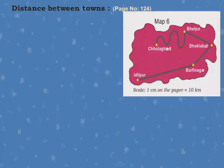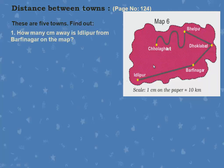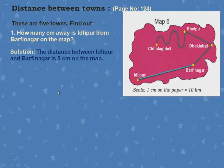Next, distance between towns, page number 124. This is Map 6 showing five towns: Idlipur, Barfinagar, Dholakbhad, Belpur, and Cholagat. The scale is 1 centimeter on the paper equals 10 kilometers. Find out how many centimeters away Idlipur is from Barfinagar on the map. You take a scale and measure — the distance between Idlipur and Barfinagar is 5 centimeters on the map.